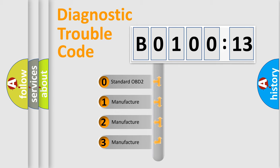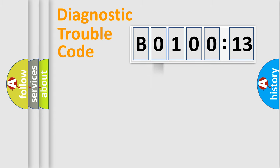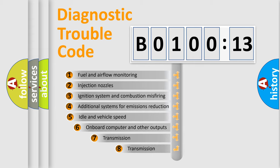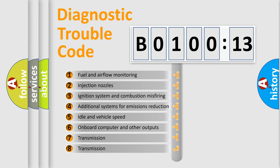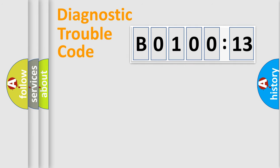If the second character is expressed as 0, it is a standardized error. In the case of numbers 1, 2, 3, it is a more precise expression of the car-specific error. The third character specifies a subset of errors. The distribution shown is valid only for the standardized DTC code. Only the last two characters define the specific fault of the group.